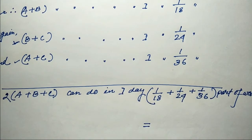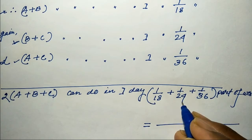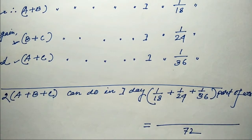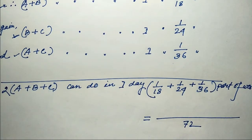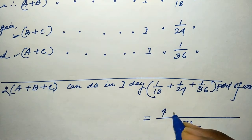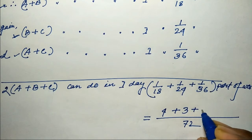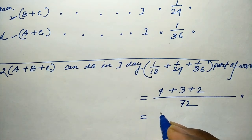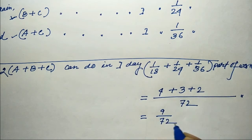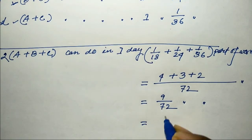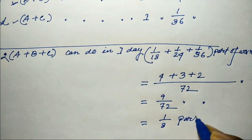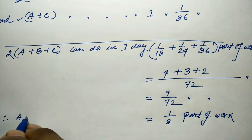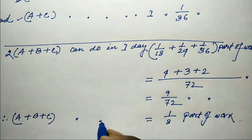Calculating the LCM of 18, 24, and 36: we get 4 plus 3 plus 2 equals 9 by 72, which equals 1/8 part of work. So A plus B plus C can do the work in one day: 1/(8×2) = 1/16 part of work.